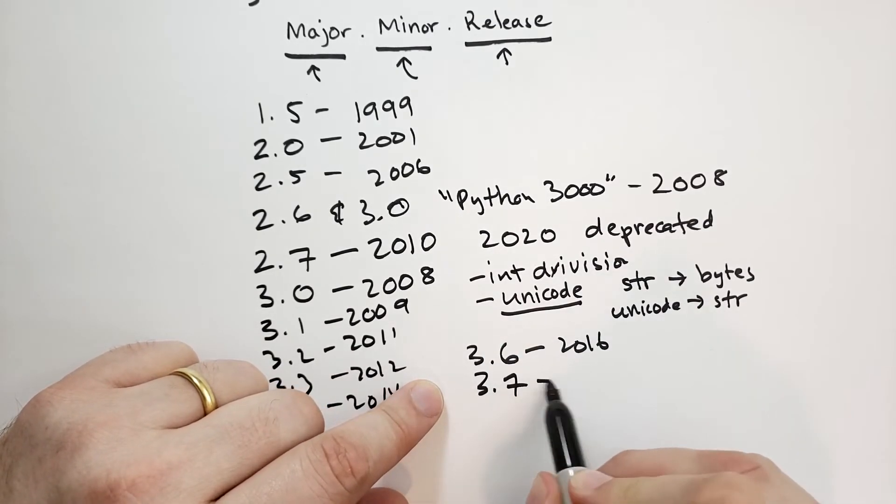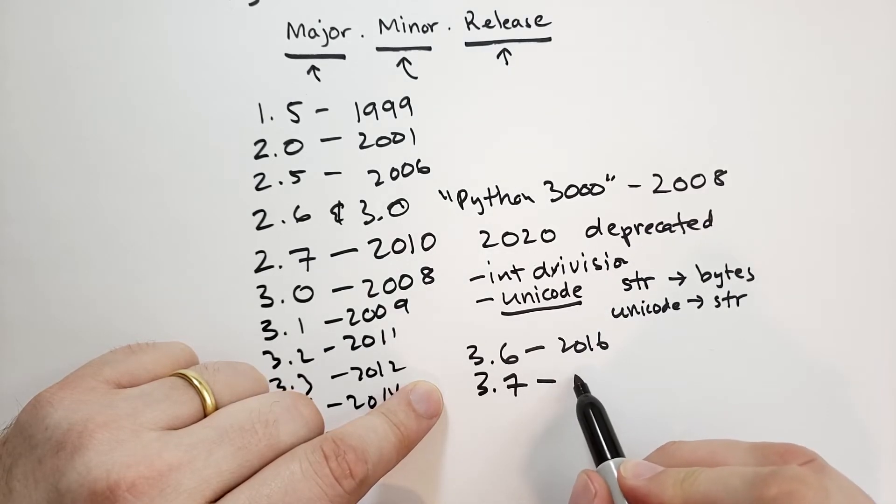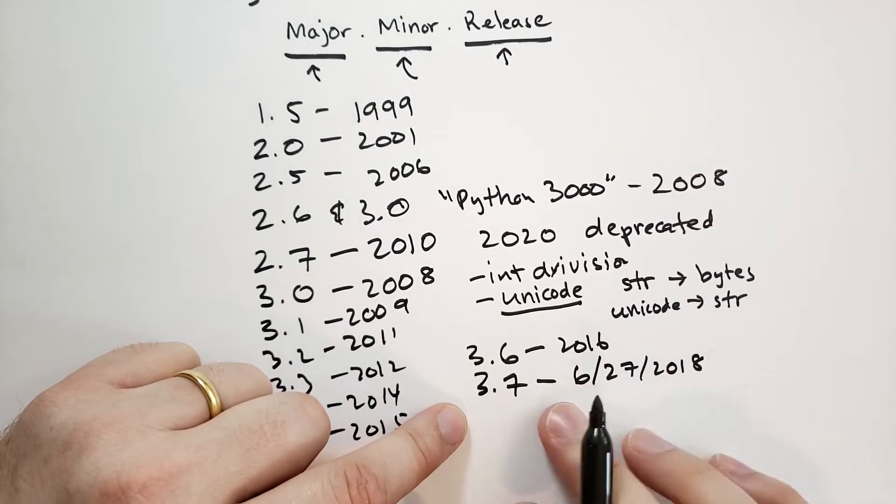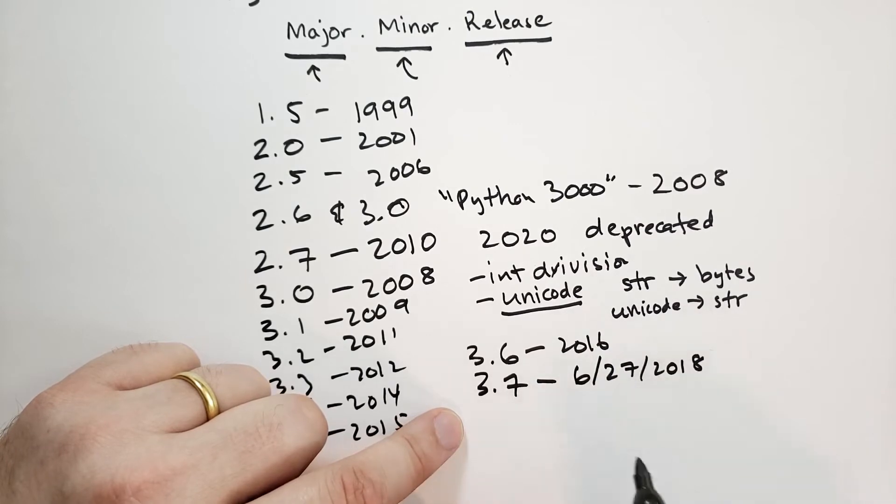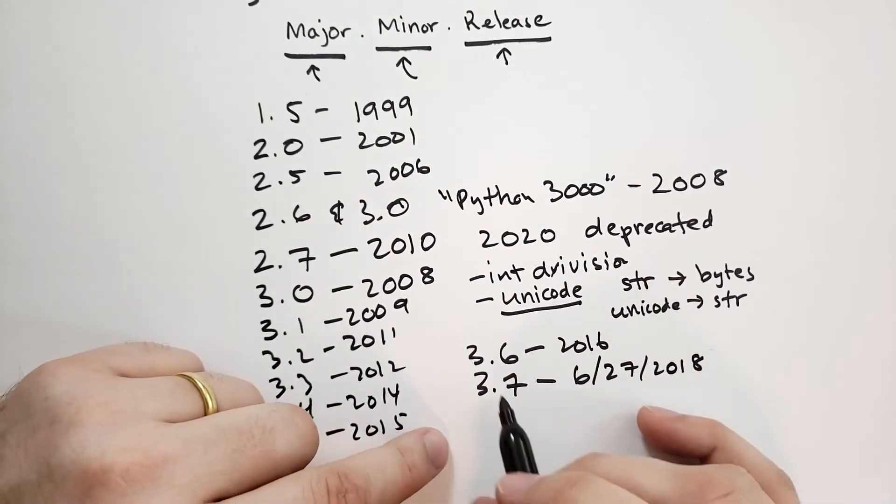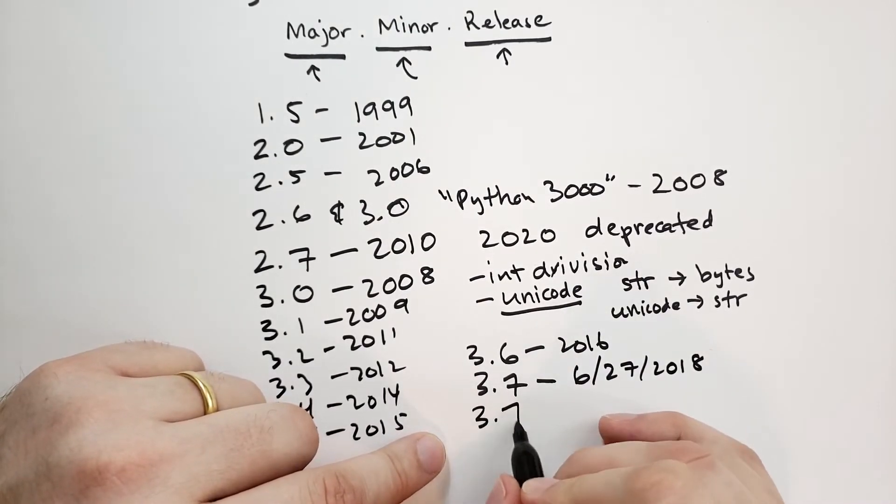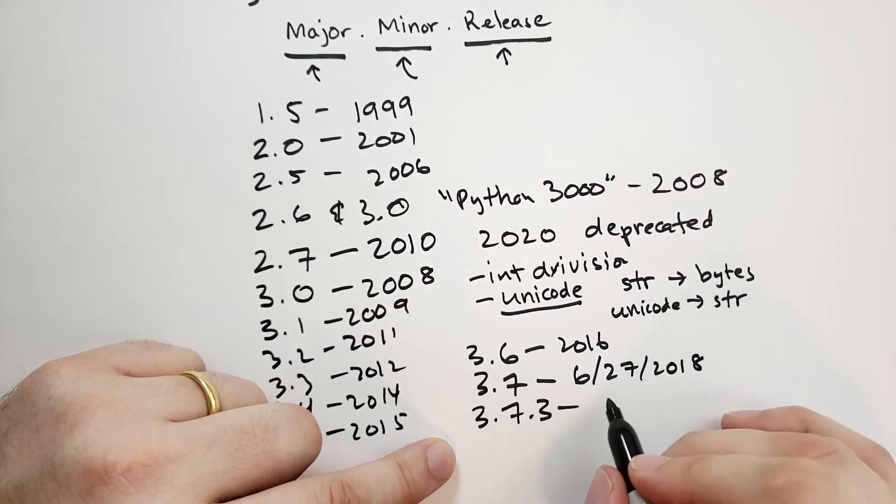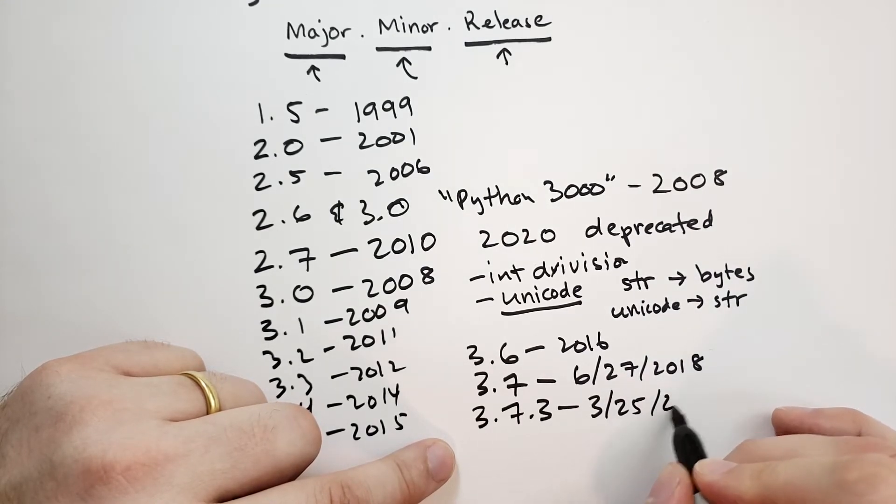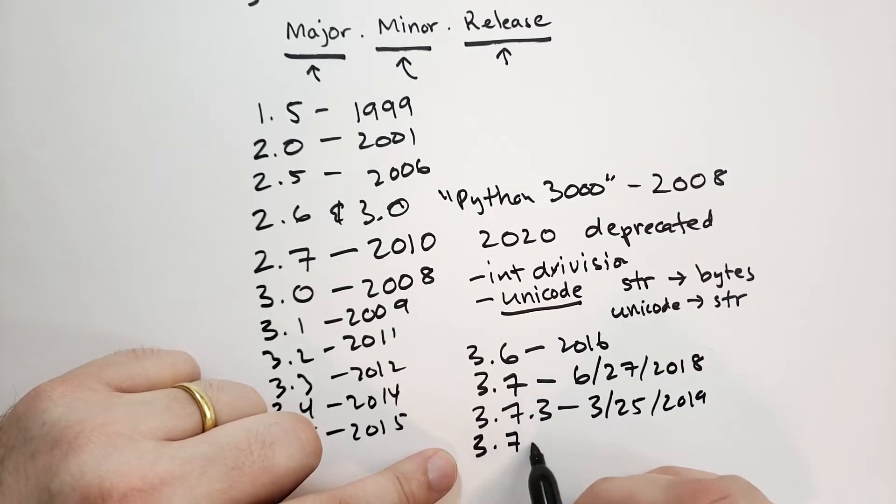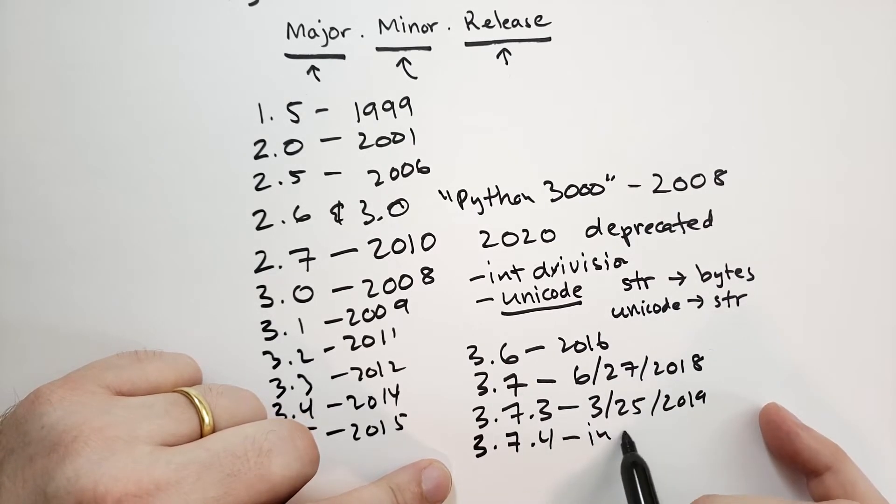And 3.7, this came out not too long ago, on 2018 June, I think the official date was June 27th, 2018. I'm using American style dates, we'll talk about date format in one of these videos. Make a note, ISO 8601, we'll make a video on ISO 8601. Then we have, the current version is 3.7.3, and right now it is June of 2018. So this actually came out on March 25th of 2019, I'm sorry, it's June of 2019, and it came out March 25th of 2019. And 3.7.4 is in the works right now, so this is in development and testing.